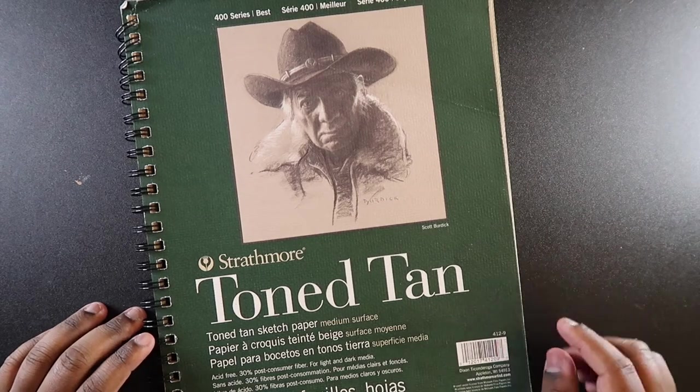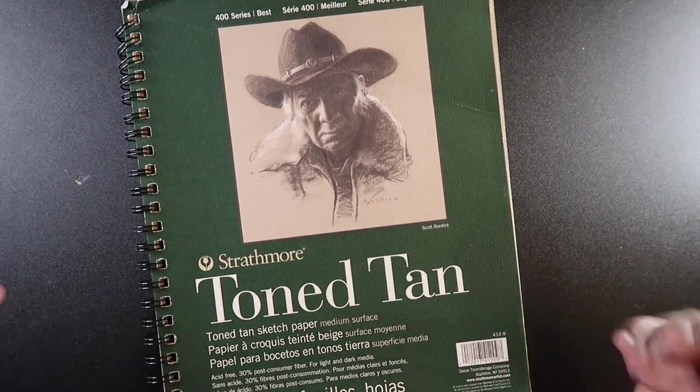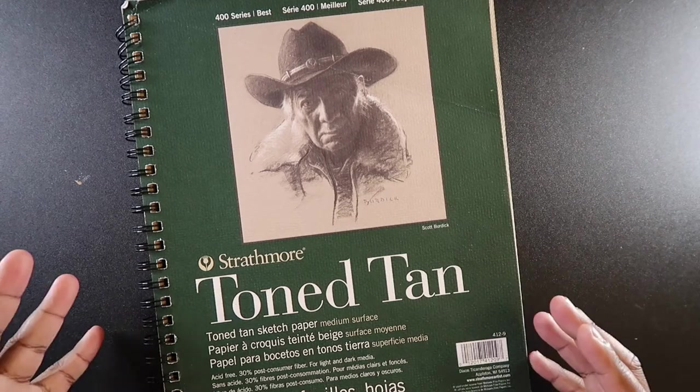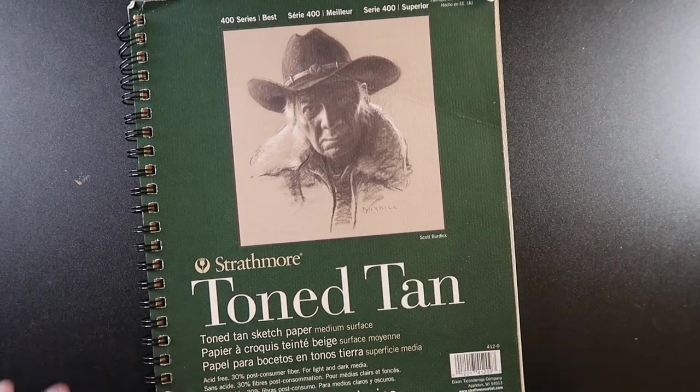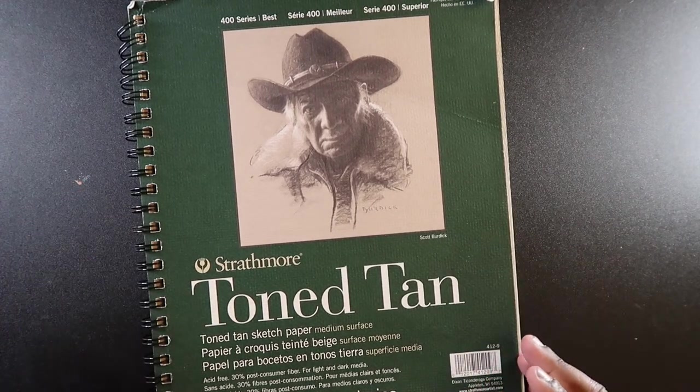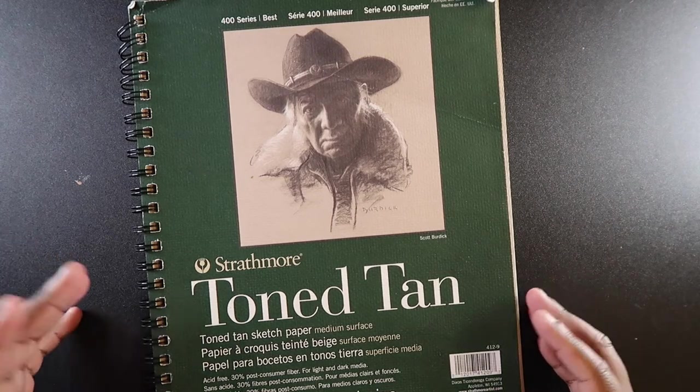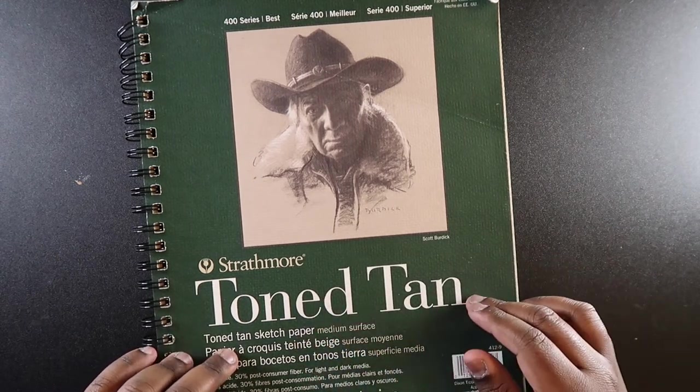Another sketchbook I like to use is called the Tone Tan Sketchbook. It works just like sketch paper and mixed media paper, except it's a little bit more smooth than regular sketch paper. You can also apply markers to it, but since it's a tone tan sketchbook, it's not going to be as white as normal sketchbooks would. It's going to have sort of a tone to it, which you can apply light and dark media to.